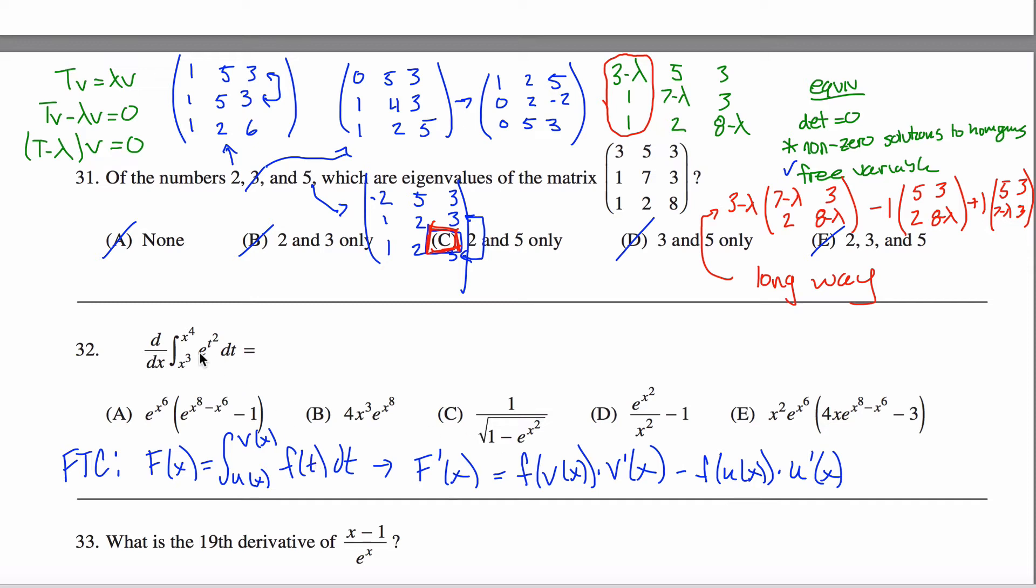Well, F of T is E to the T squared power. And so I want F of V of X. So I want this thing right here. So E to the, and then instead of T squared power, I want playing the role of T will first be my X to the fourth.